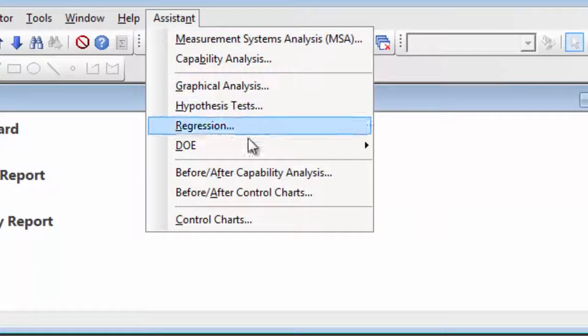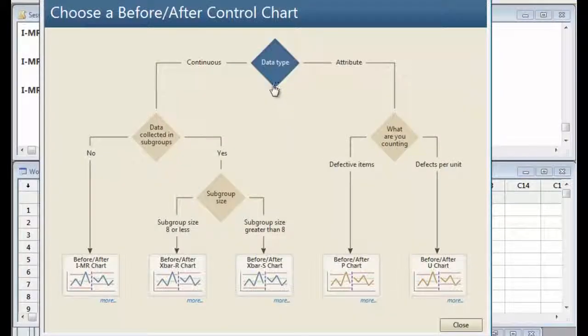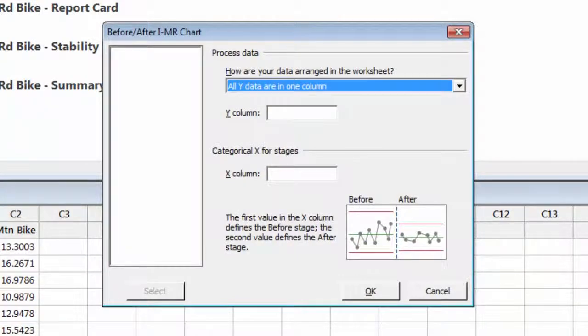Choose Assistant, Before-After control charts to compare the process with the old route to the new one. With continuous data that was not collected in subgroups, the Assistant's decision tree directs you to the Before-After IMR chart.